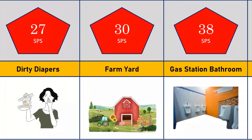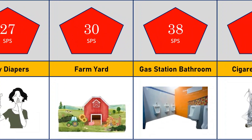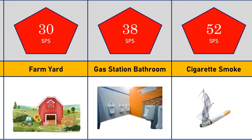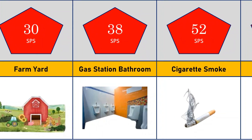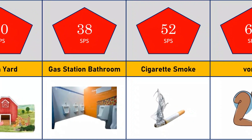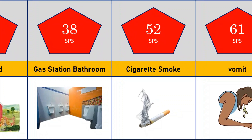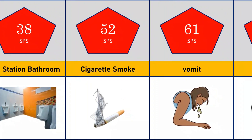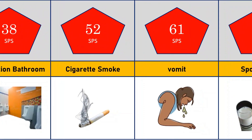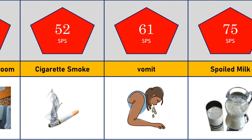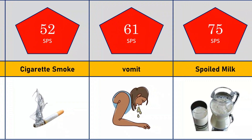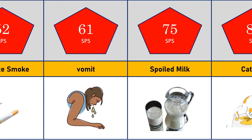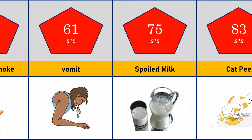Smell of gas station bathroom: 38 SPS. Smell of cigarette smoke: 52 SPS. Smell of vomit: 61 SPS. Smell of spoiled milk: 75 SPS.